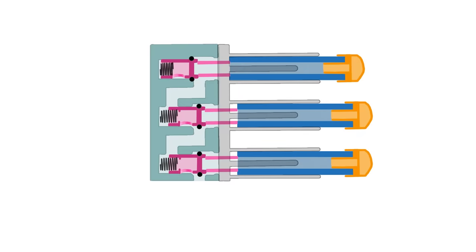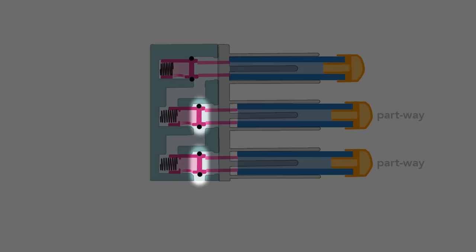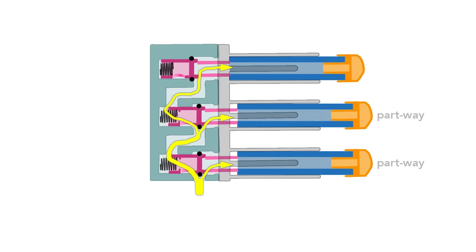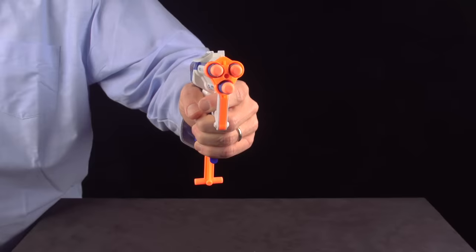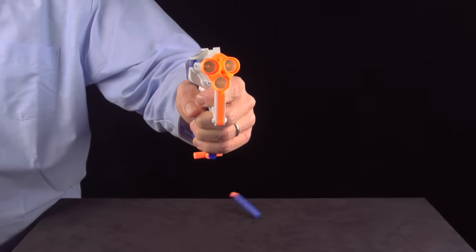Once you understand this mechanism, you can defeat it. If you put the first and second darts in part way, the valves are half open so the air flows into the first and second barrels, and of course into the third barrel. This splits a single blast into three weaker streams. When I pull the trigger, all three darts fire at once, but they don't travel very far.